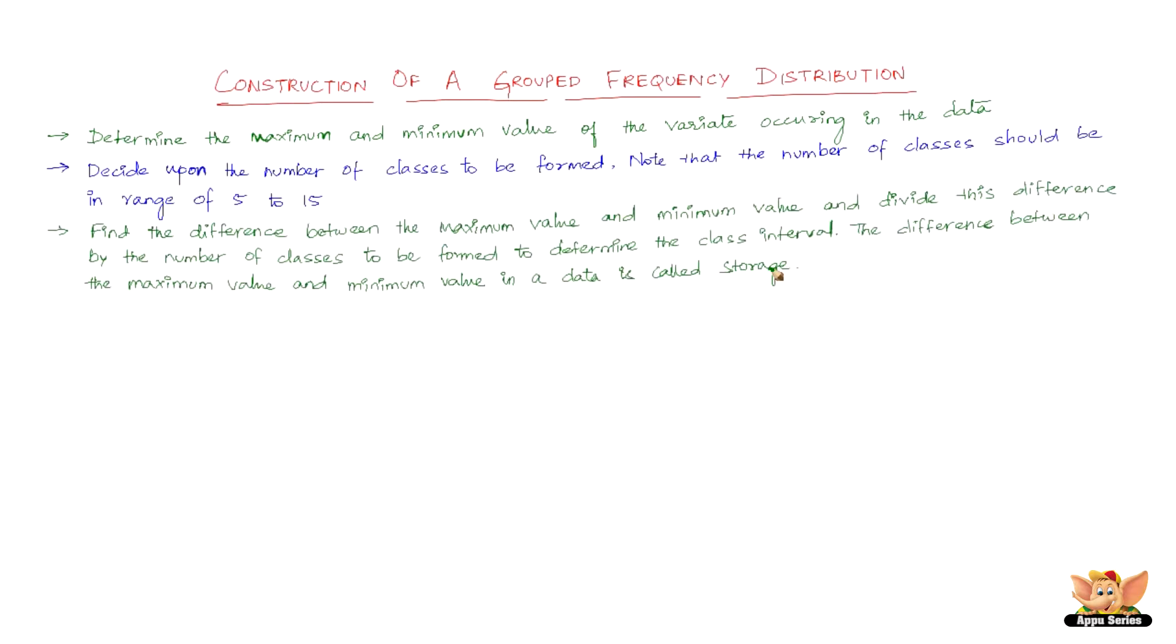The third step: find the difference between the maximum value and minimum value and divide this difference by the number of classes to be formed to determine the class interval. The difference between the maximum value and minimum value in a data is called range.